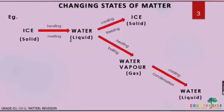Water can be converted into ice, which is in solid state, after cooling. That process is called freezing. Water can also be converted into water vapor, which is in gaseous state, after heating. And this water vapor can again be converted into water. Which process is that? That is condensation.